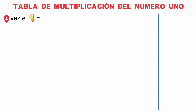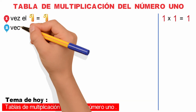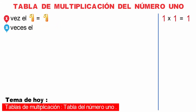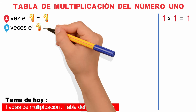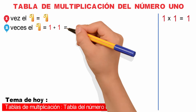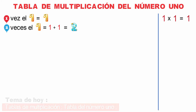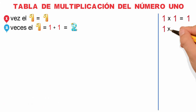1 es igual a 1. Y escrito como una multiplicación sería 1 por 1 es igual a 1. 2 veces el 1 es igual a 1 más 1 es igual a 2. Y escrito como una multiplicación sería 1 por 2 es igual a 2.